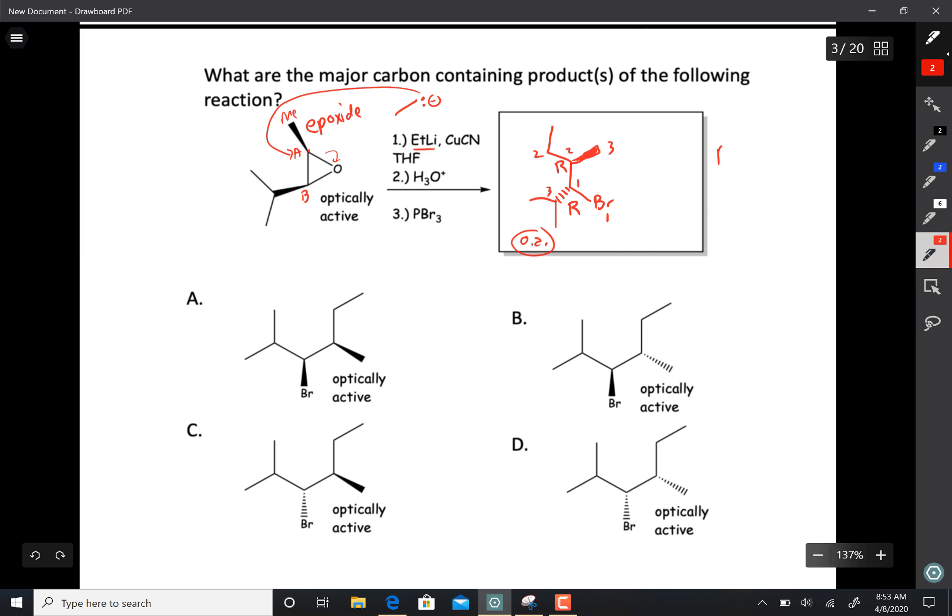So one, two, three—that's an S chiral center. We don't have to go any further. One, two, three—also an S chiral center.